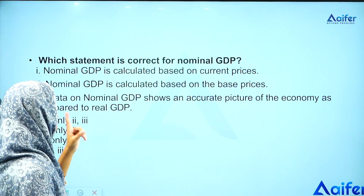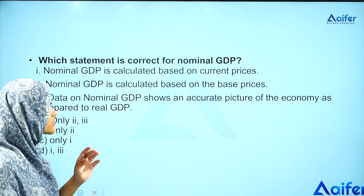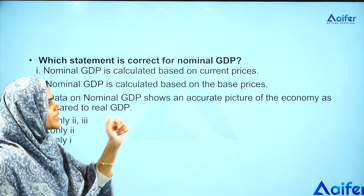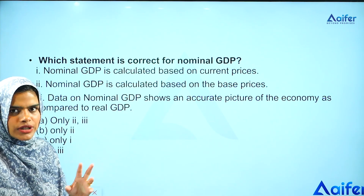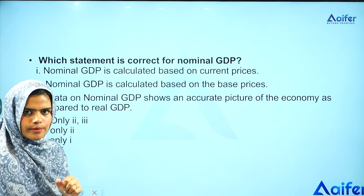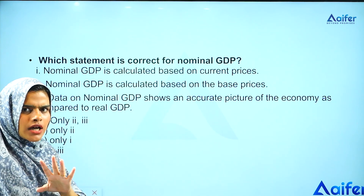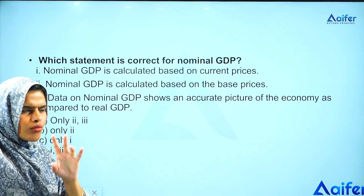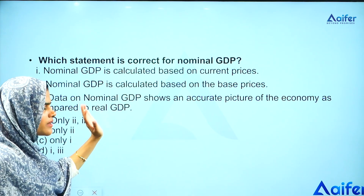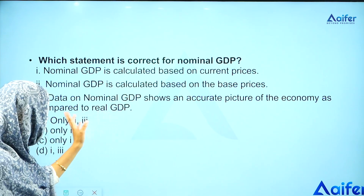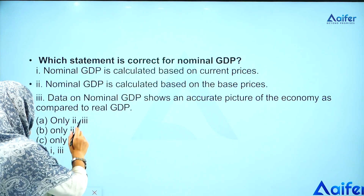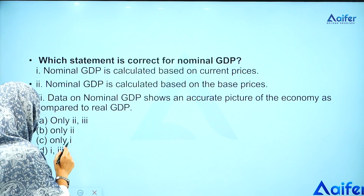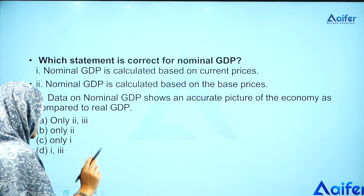And the third statement: data on nominal GDP shows an accurate picture of an economy as compared to the real GDP. The options are: only 2 and 3, only 2, only 1, or only 1 and 3.